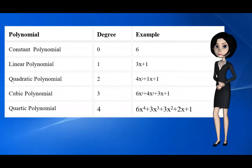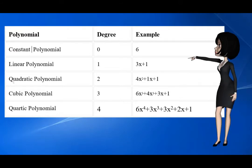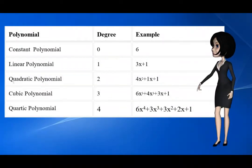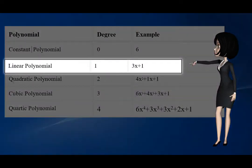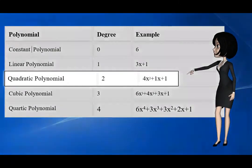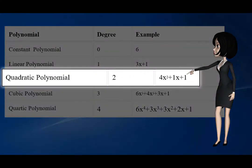Let us learn types of polynomials based on their degree. If the degree of the polynomial is 0 then it is called a constant polynomial. If the degree of the polynomial is 1, then it is called a linear polynomial. If the degree of the polynomial is 2, then it is called a quadratic polynomial.